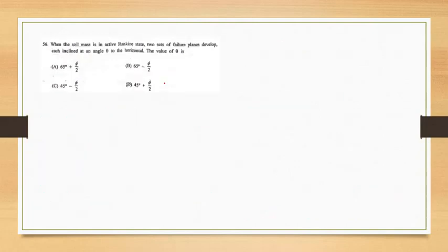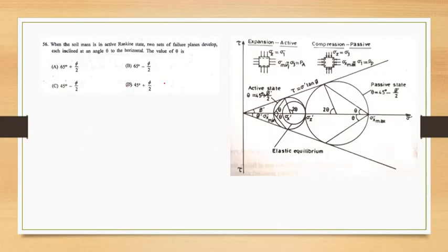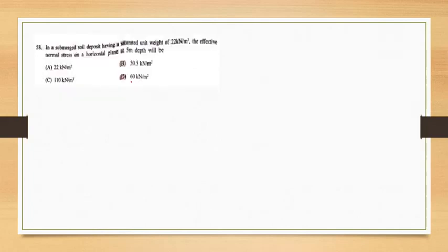Now the next question: when the soil mass is in an active Rankine state, two sets of failure planes develop, each inclined at an angle theta to the horizontal. The value of theta is — from the Mohr's circle we can see that in the active state the angle of inclination of the failure plane is 45 + phi/2. So the answer is option D: 45 degrees + phi/2.